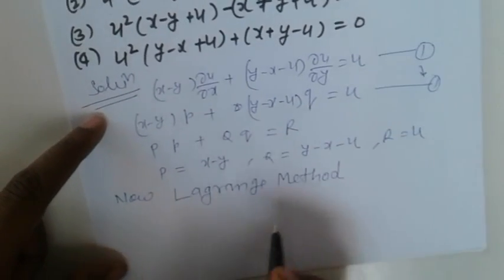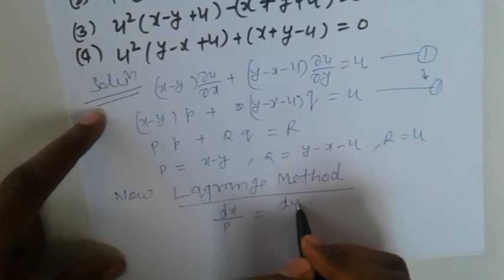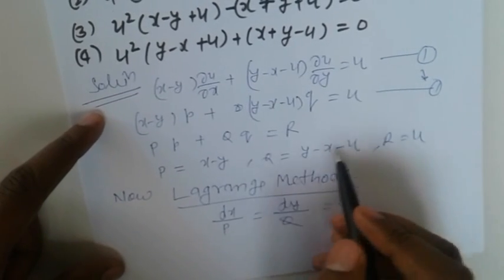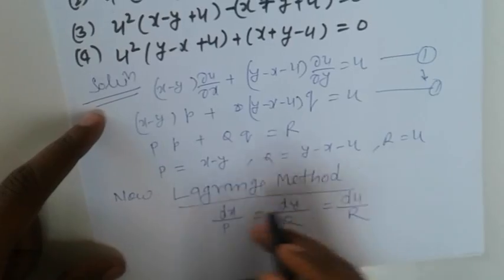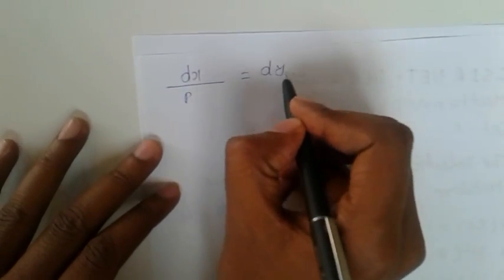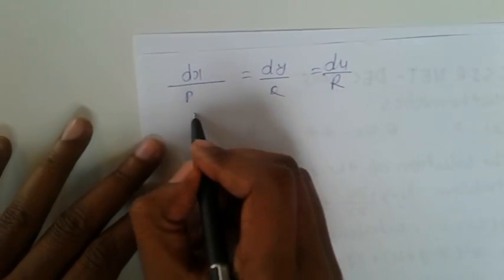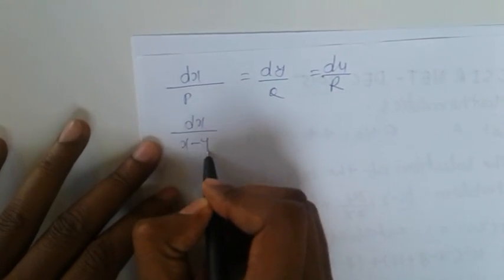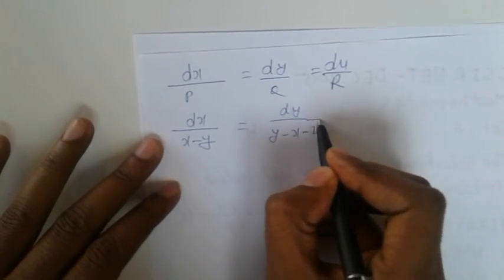Using Lagrange's method, we write the auxiliary equations: dx/P = dy/Q = du/R. Substituting the values: dx/(x minus y) = dy/(y minus x minus u) = du/u.